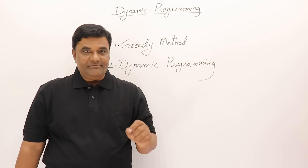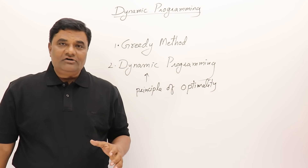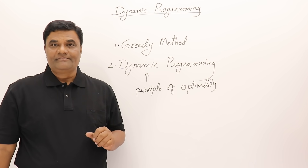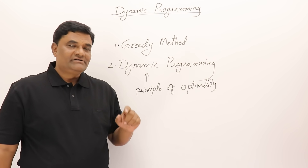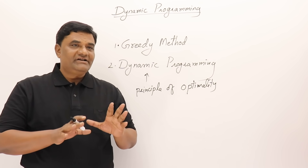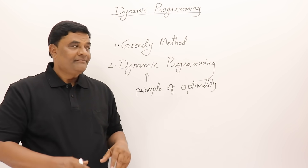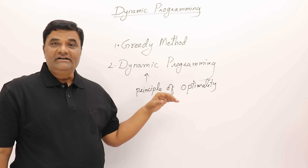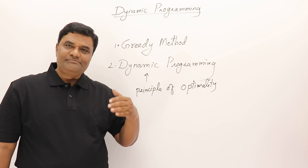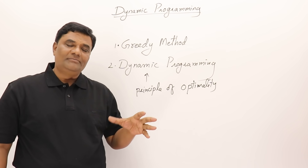Dynamic programming follows the principle of optimality, which says that a problem can be solved by taking a sequence of decisions to get the optimal solution. One key difference: in greedy method a decision is taken one time and we follow that procedure, whereas in dynamic programming a decision is taken at every stage.